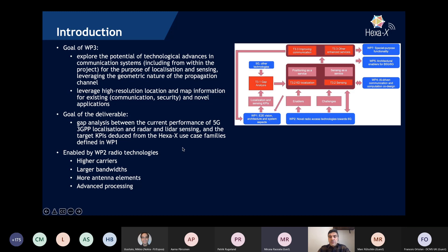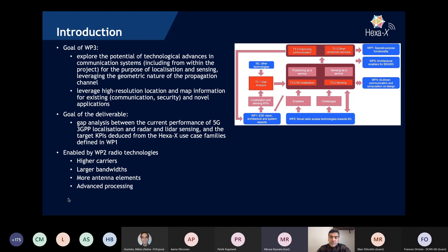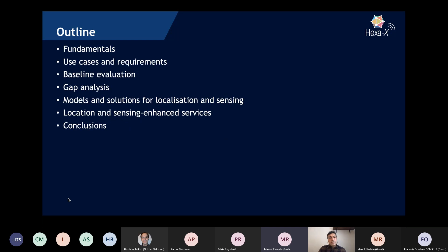The goal of this first deliverable is more on gap analysis — what we expect for 6G, what the requirements are, what is possible in 5G, and then finding the gap. The next step would be how to close that gap. Everything we say about technologies available in communication for 6G will be based on technologies developed by Work Package 2. The outline of this talk covers fundamentals, use cases and requirements, gap analysis, models and solutions, and services enabled by localization and sensing.